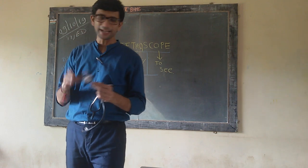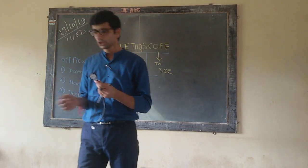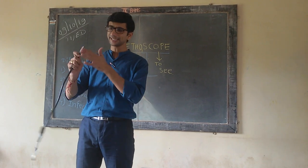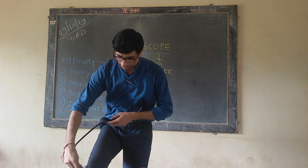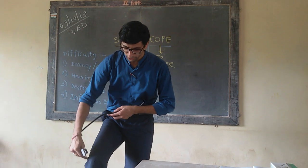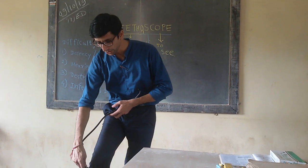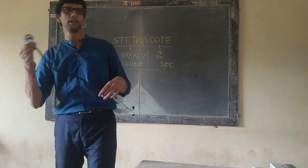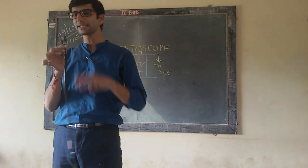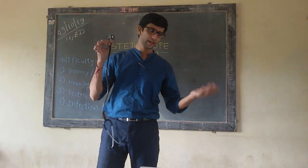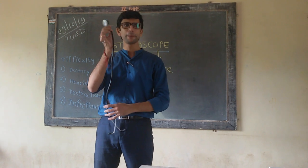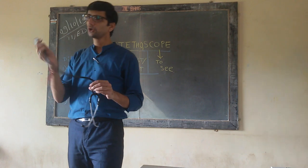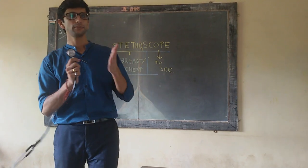Practically, if we don't have a knee hammer, we can use the side of the stethoscope as one. Above the tibial tuberosity, just give a stroke and you can get a knee reflex or various reflexes. Though it is not advisable to write this in theory, practically if you don't have a knee hammer, you can use the stethoscope side to elicit a knee reflex.